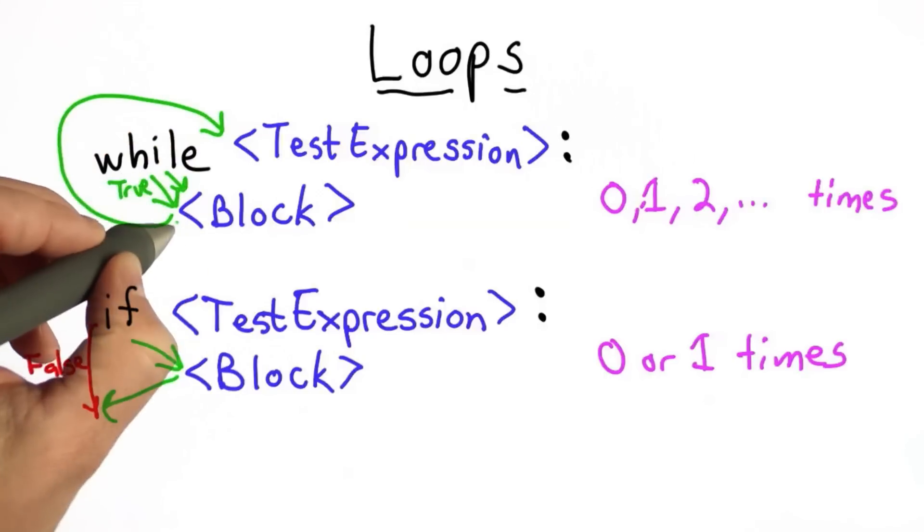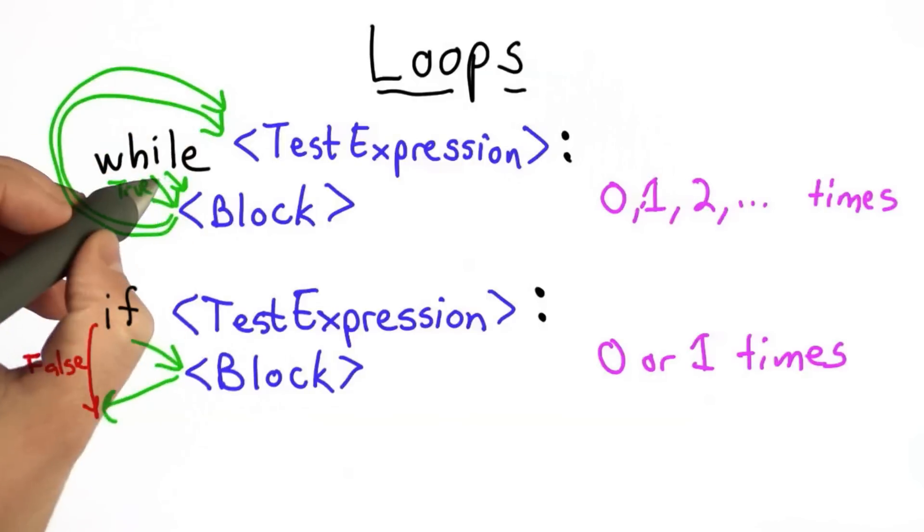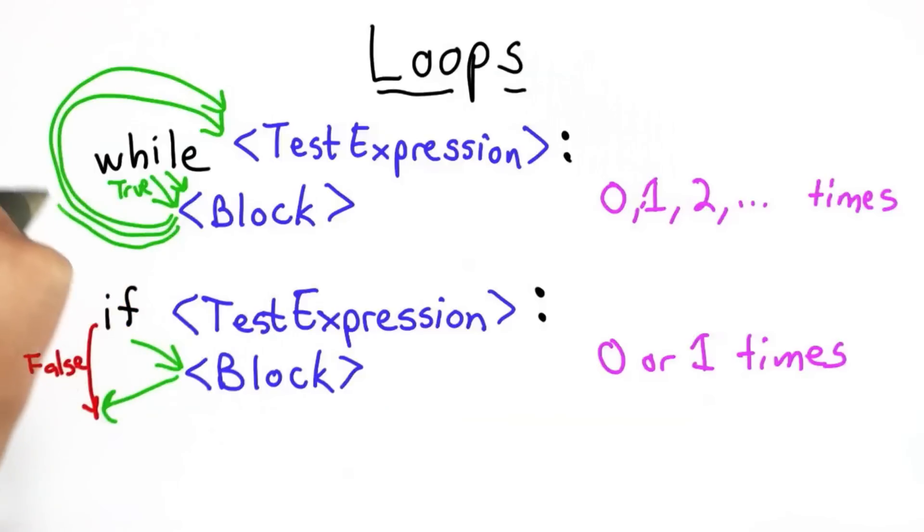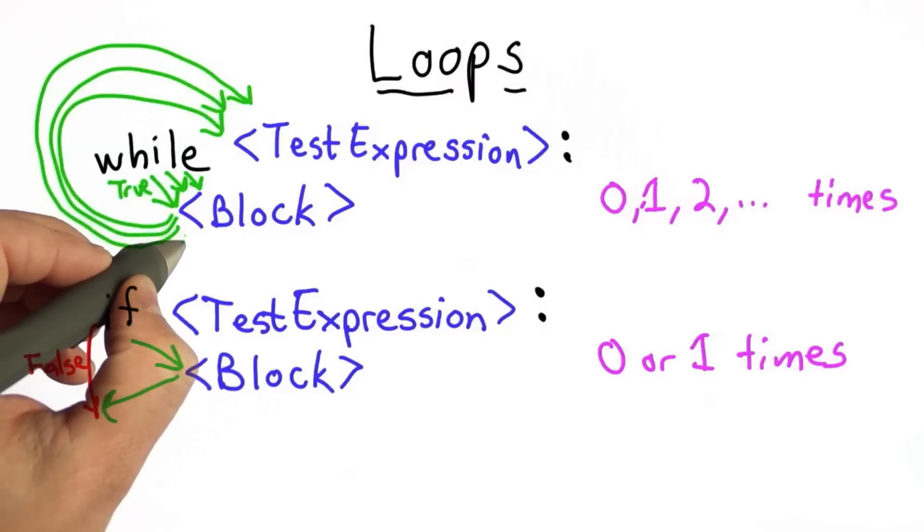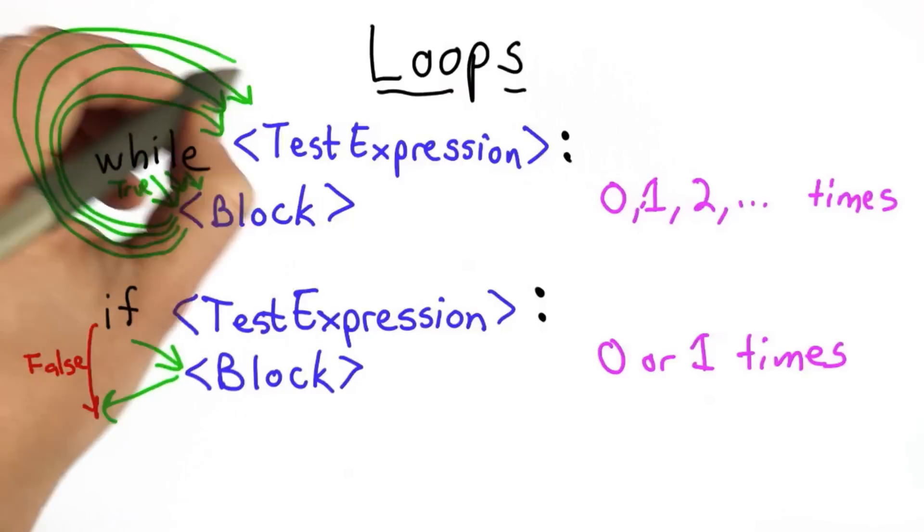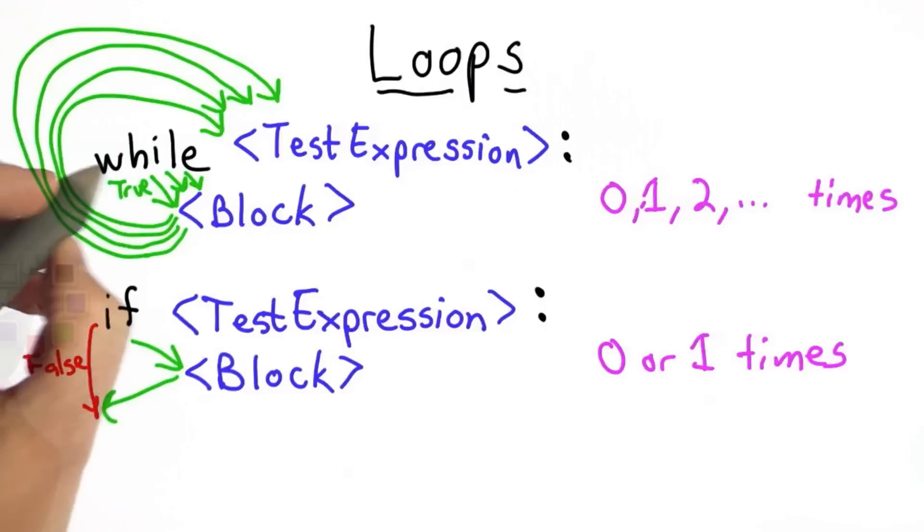If it's true, we go back to the block. We always go back to the test expression. If it's true, we do the block again. We go back to the test expression. If it's true again, we do the block again. We go back to the test expression. And we can keep going around as many times as we need. As long as the test expression is true, we'll keep executing the block and keep trying the test expression again.